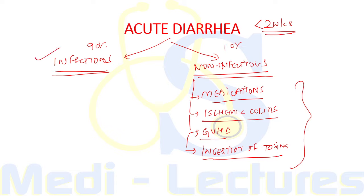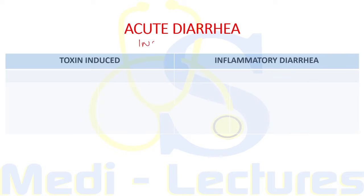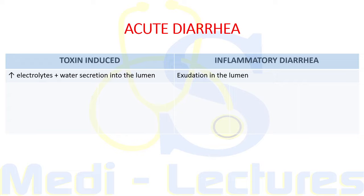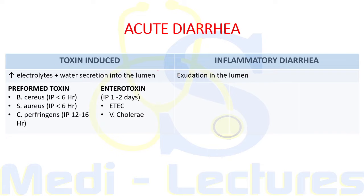Infectious diarrhea is classified into two types: toxin-induced or inflammatory diarrhea. Toxin-induced diarrhea is due to presence of toxins leading to increased electrolytes and water secretion into the lumen. Inflammatory diarrhea leads to exudation and formation of pus in the lumen. Toxins can further be either preformed toxins or enterotoxins released in the intestine.